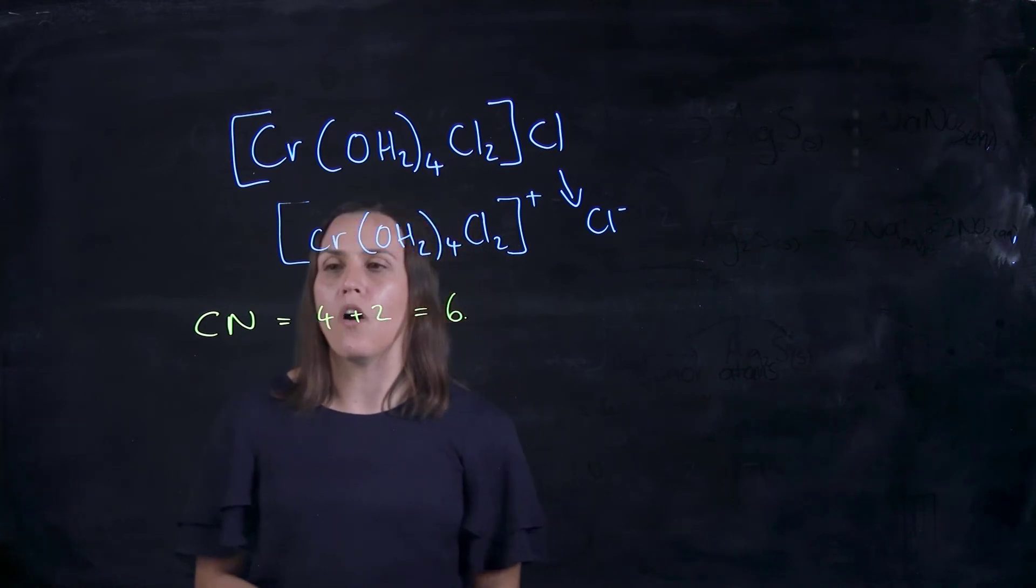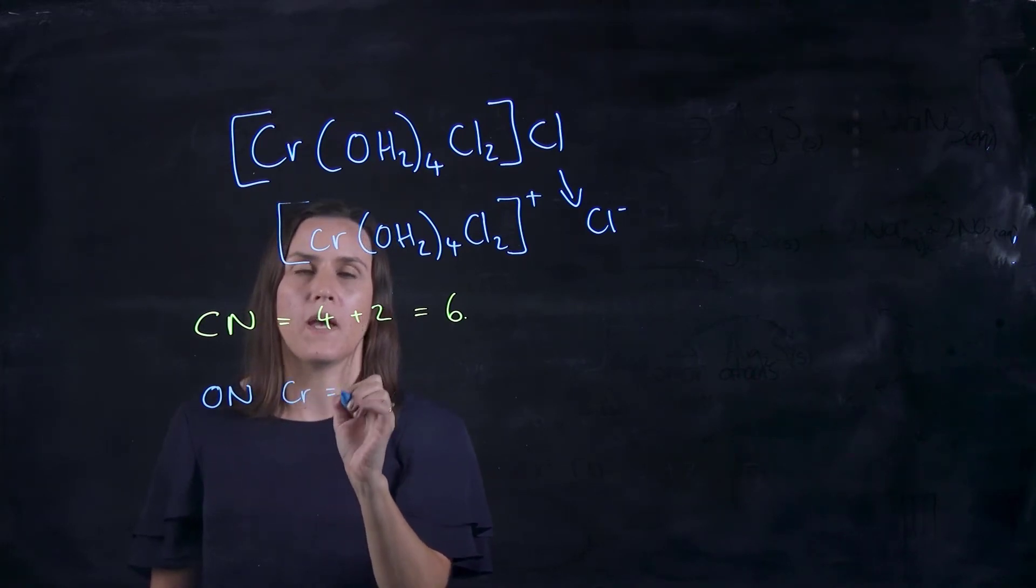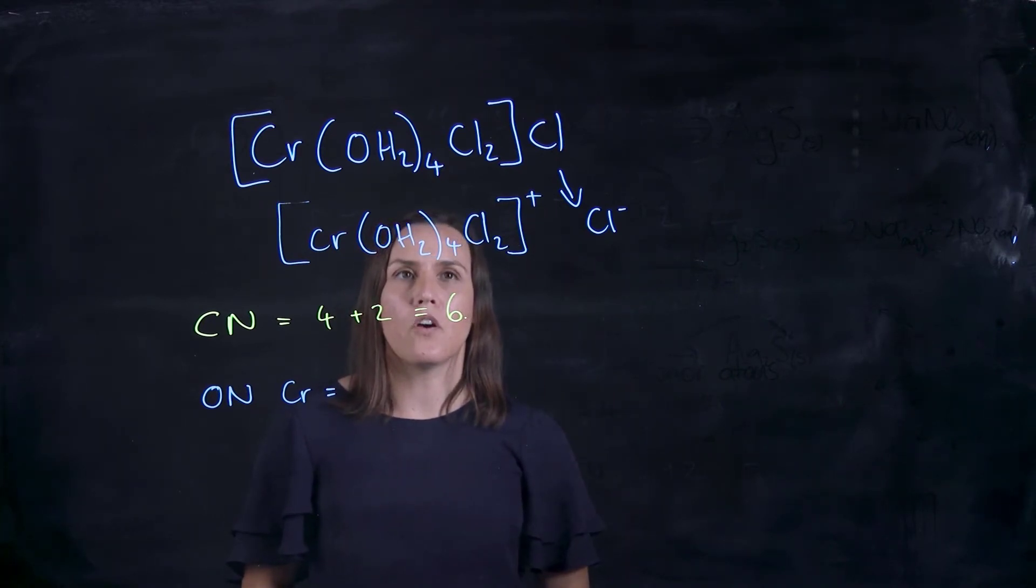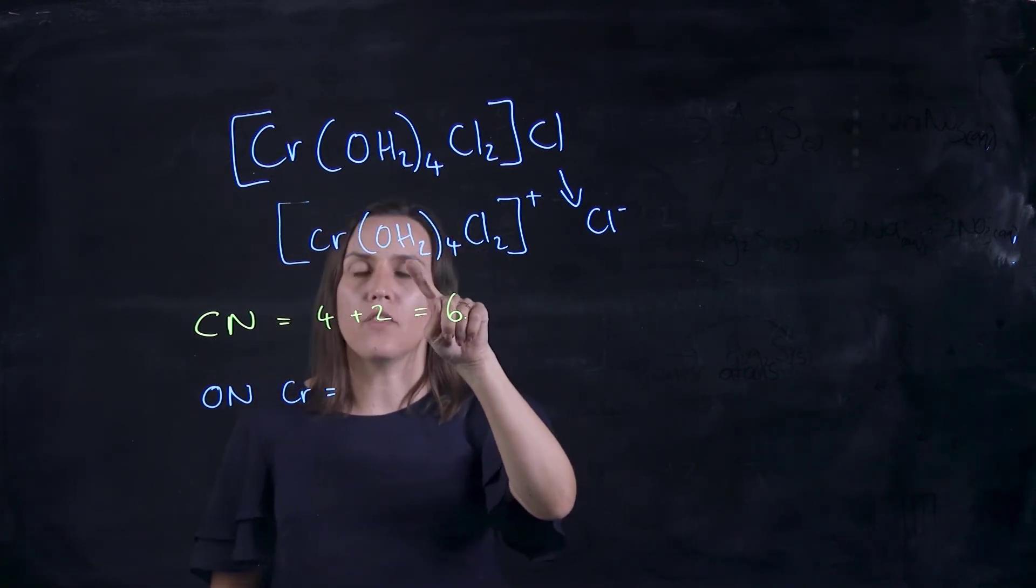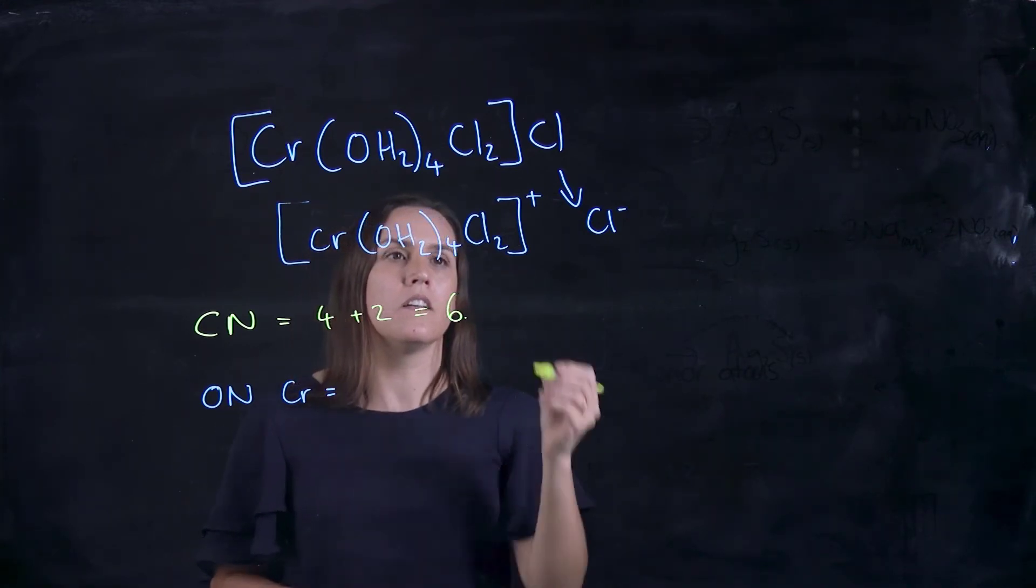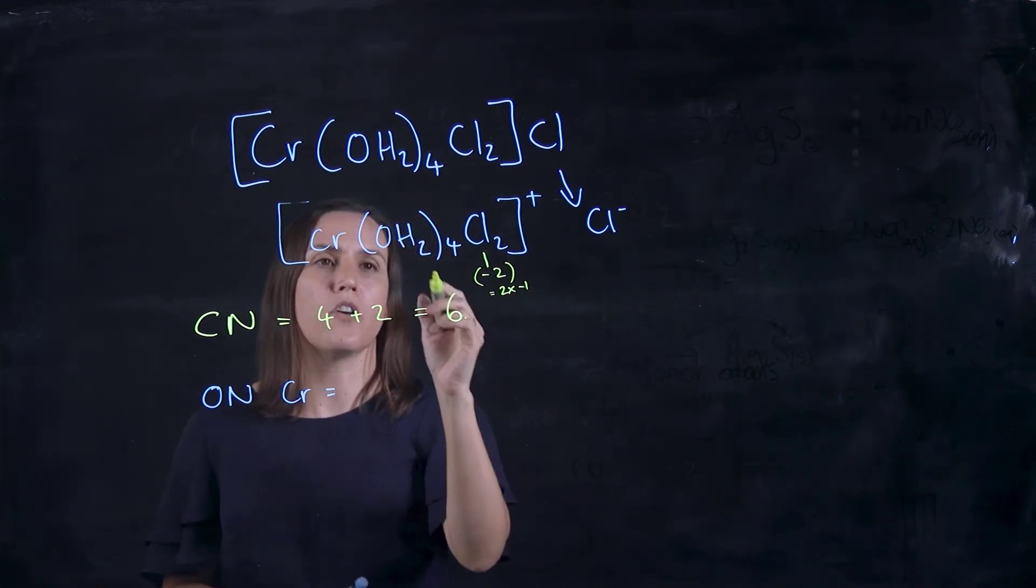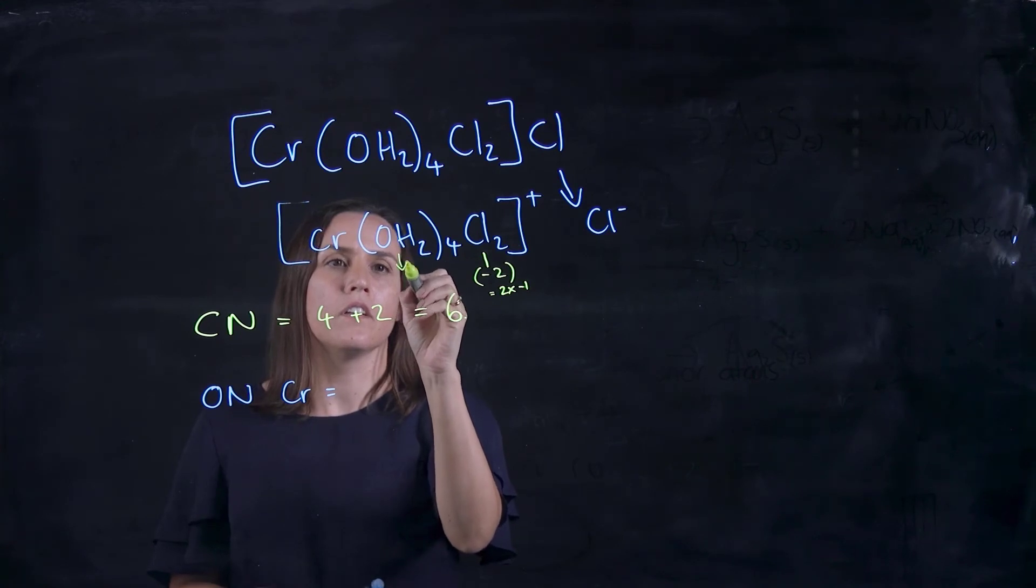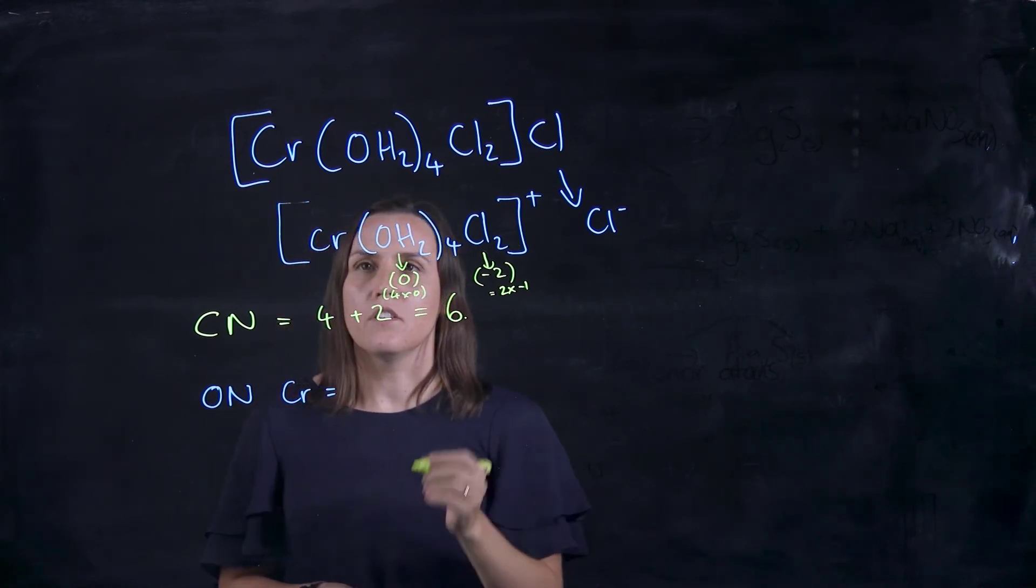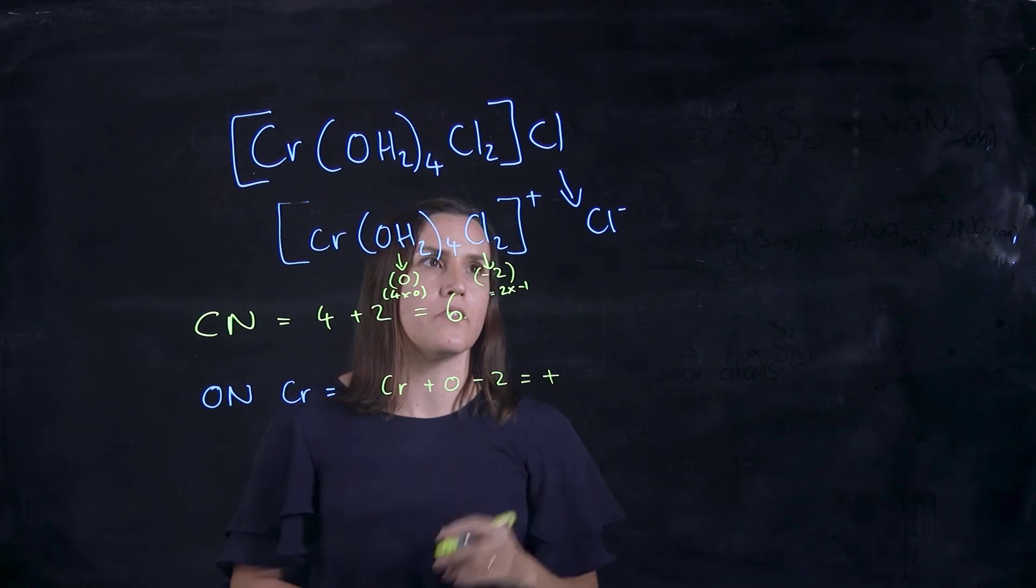Now to work out the oxidation number, I'll just do ON for oxidation number. And it's going to be on the chromate that we're going to be looking at. So we know overall it's got a positive. So the chlorine, each one of those is a negative and the water is neutral. So if I want to write this down on here, so this is -2 because I've got two times -1. So that's where I've got it from. And this one here, they're all neutral. So I've got zero there, which would be four times zero, which gives us zero. So I've got the Cr plus zero minus two gives me that positive overall.